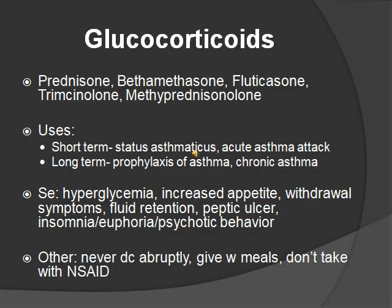Glucocorticoids prevent the inflammatory response by suppressing airway mucus production, immune response, and adrenal function. They can be given orally, inhaled, or IV. Medications to know include prednisone, dexamethasone, fluticasone, triamcinolone — they all end in '-one' or '-alone.' A hint: glucocorticoids have a lot of C's, and the opposite of a lot is one, so '-one.' They're used short-term for status asthmaticus and acute asthma attacks, and long-term for prophylaxis and chronic asthma. Side effects mirror Cushing syndrome: hyperglycemia, increased appetite, withdrawal symptoms, fluid retention, peptic ulcer, insomnia, euphoria, and psychotic behavior. Never stop abruptly, give with meals, and do not take with NSAIDs.